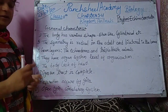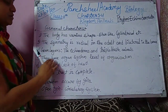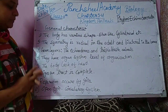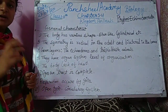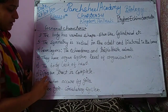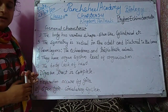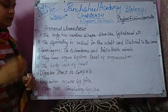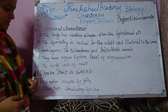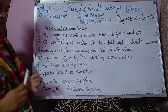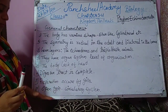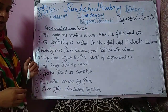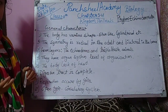If we talk about the level of organization, organ system level of organization is seen in it. The body lacks a head. The digestive tract is complete. Respiration occurs by gills and an open circulatory system is present, that is called the haemal system.